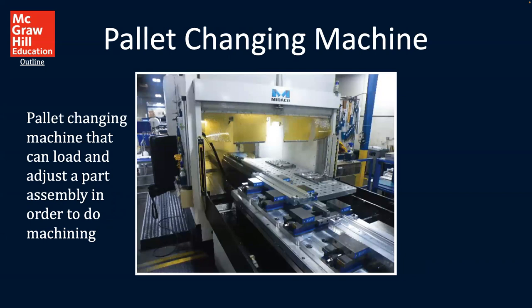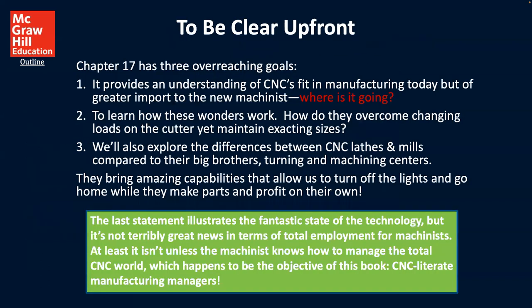This is a pallet changing machine. A pallet changing machine can load and adjust a part assembly in order to do the machining. You may have very precise applications or different types of steps that would be necessary to successfully develop the parts across the various stages of production.